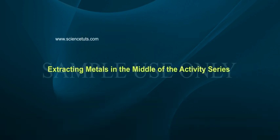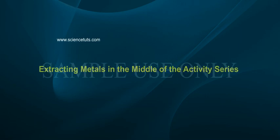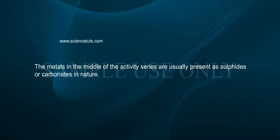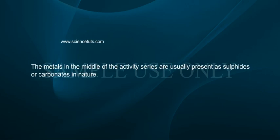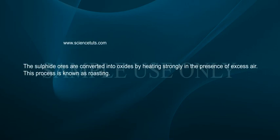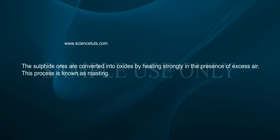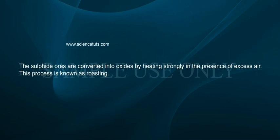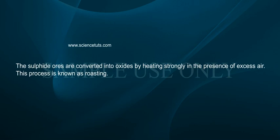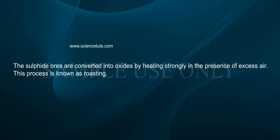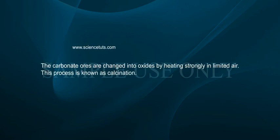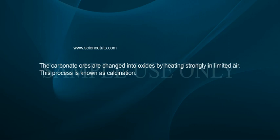Extracting metals in the middle of the activity series. The metals in the middle of the activity series are usually present as sulfides or carbonates in nature. The sulfide ores are converted into oxides by heating strongly in the presence of excess air — this process is known as roasting. The carbonate ores are changed into oxides by heating strongly in limited air — this process is known as calcination.